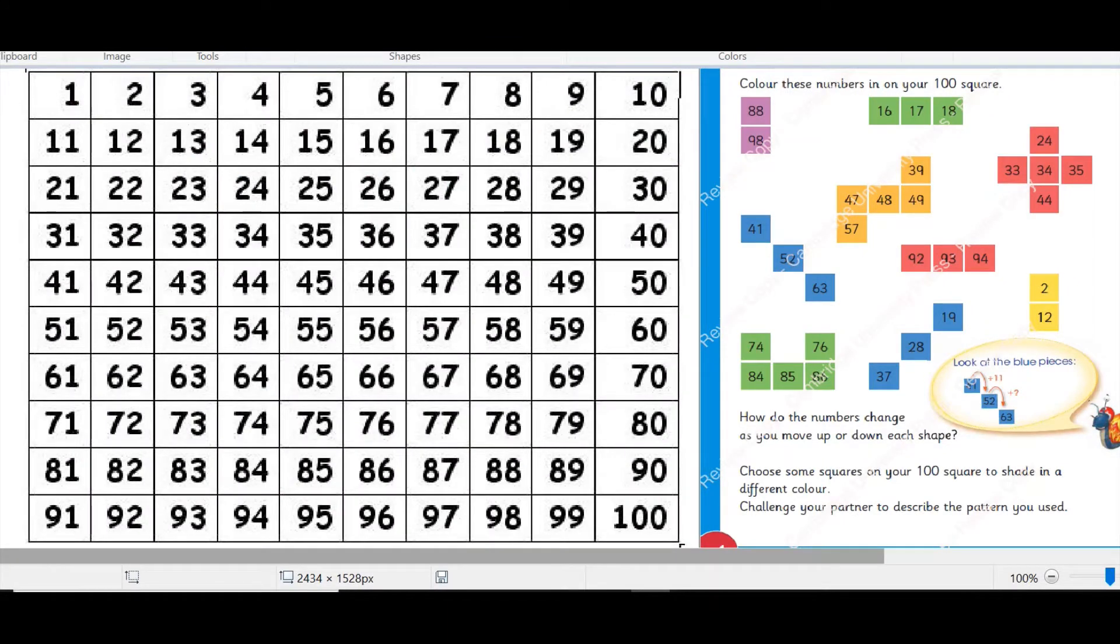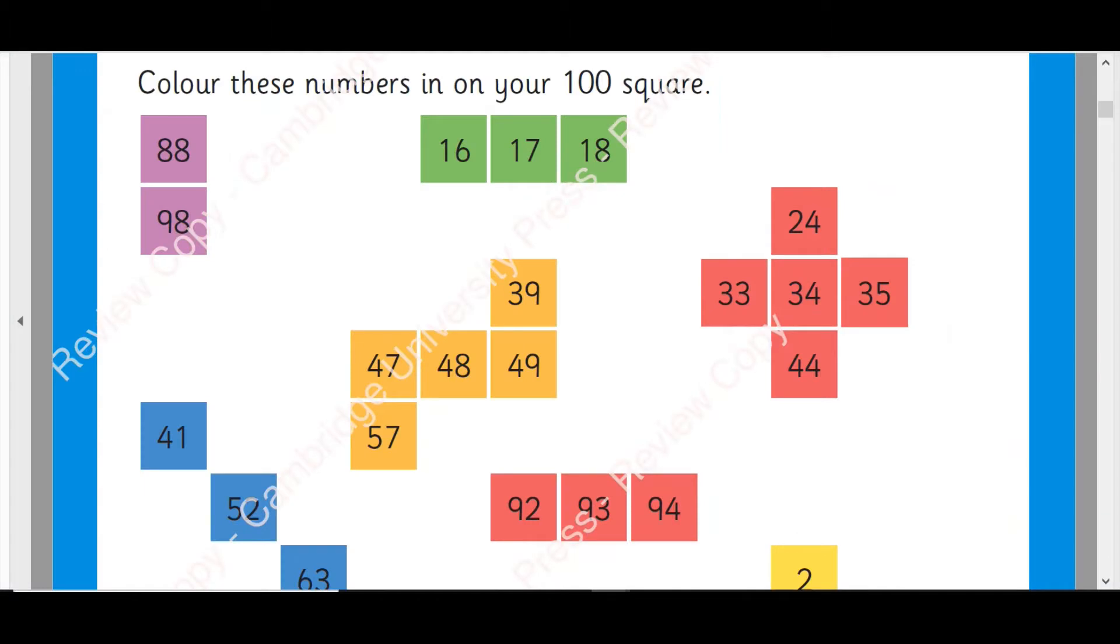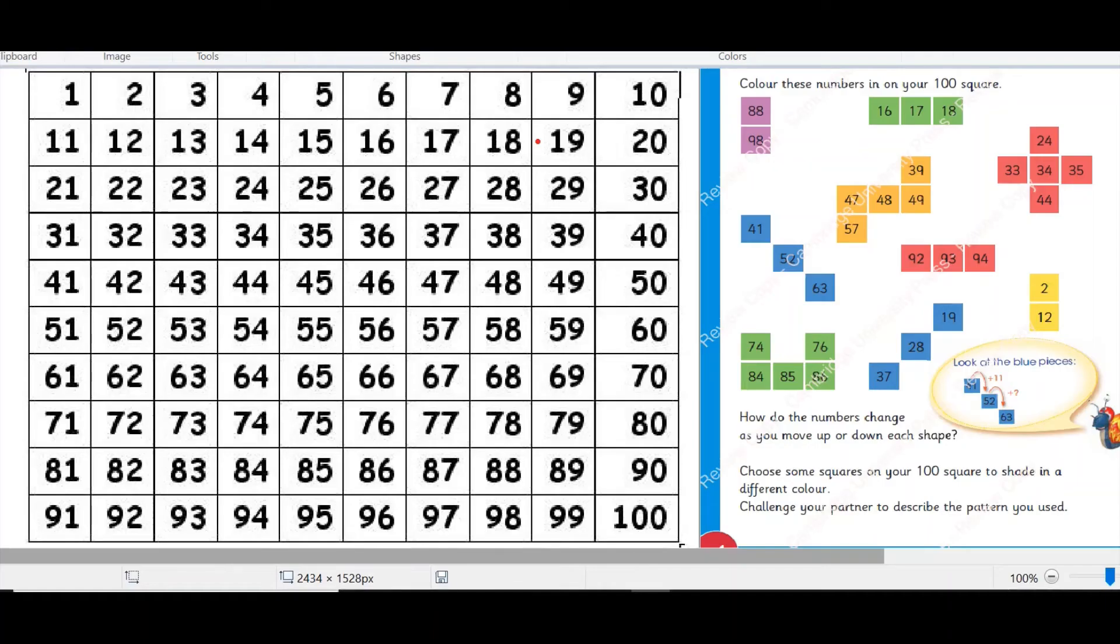They are talking about 100 square which is like this and they say that you need to color number 88 and 89 and 16, 17 and 18.